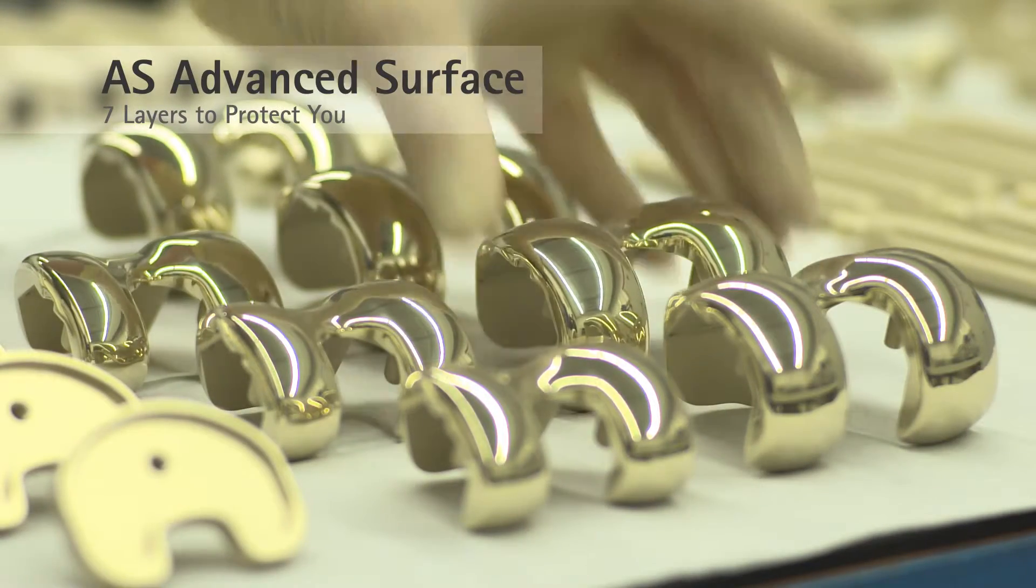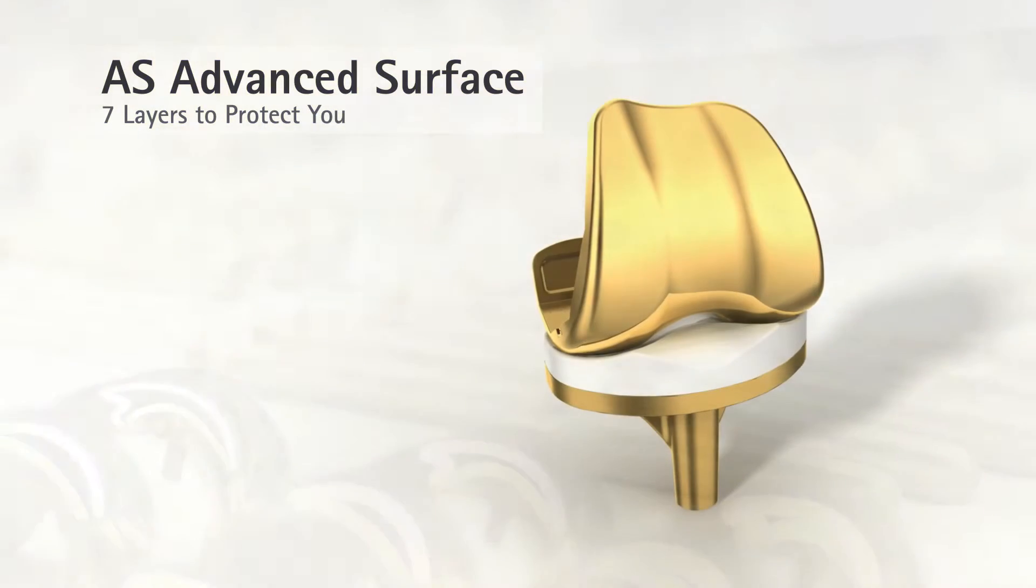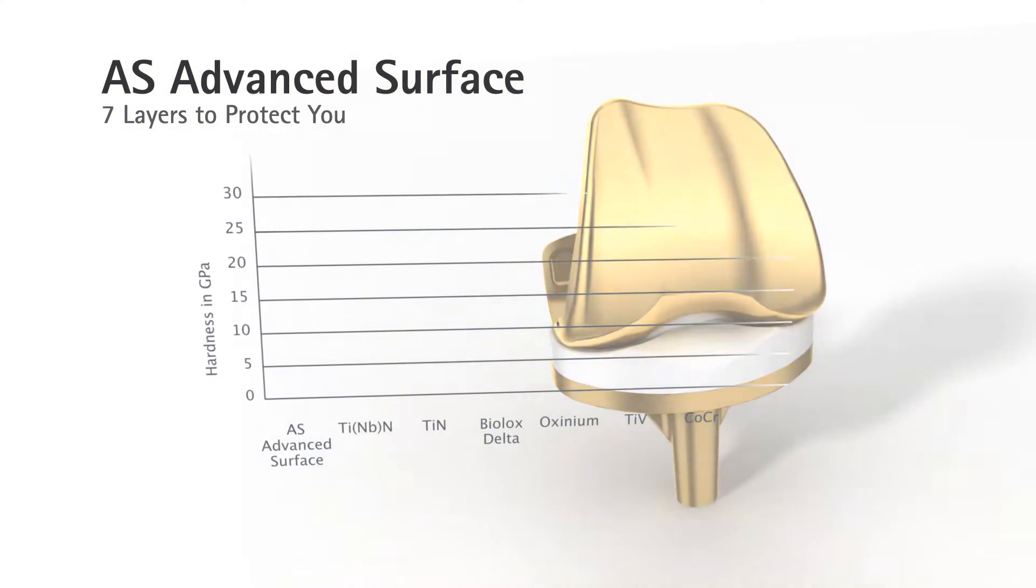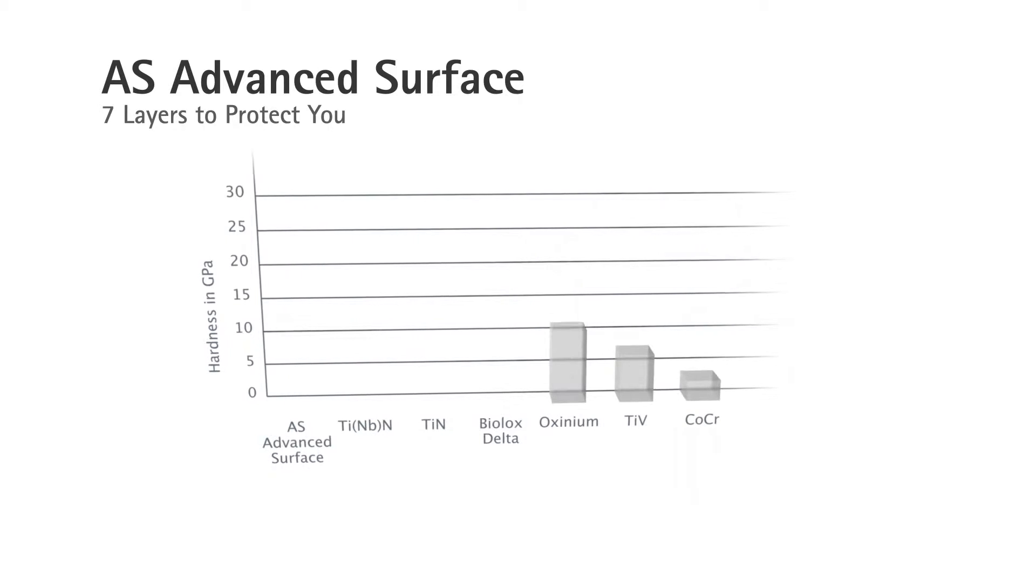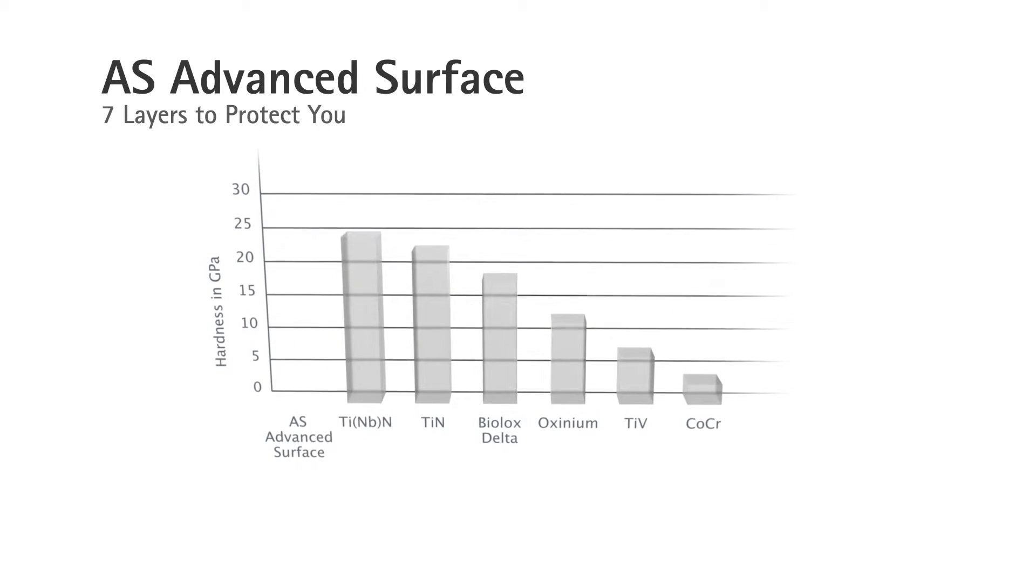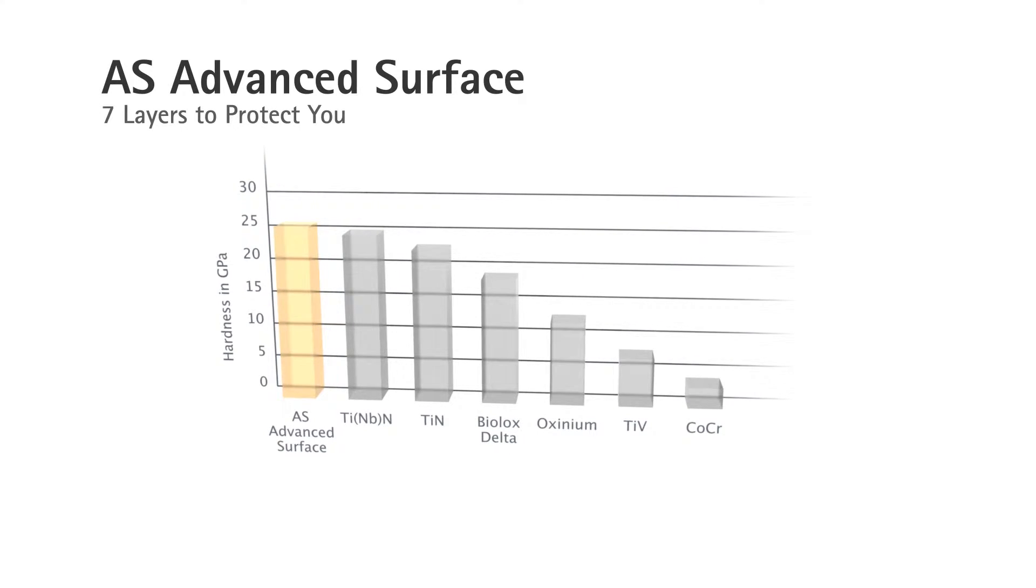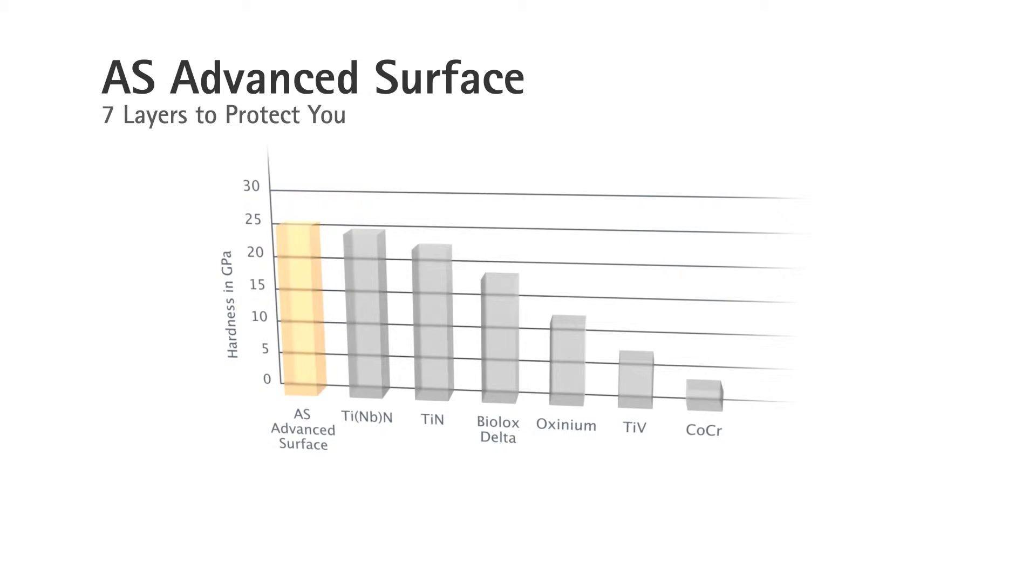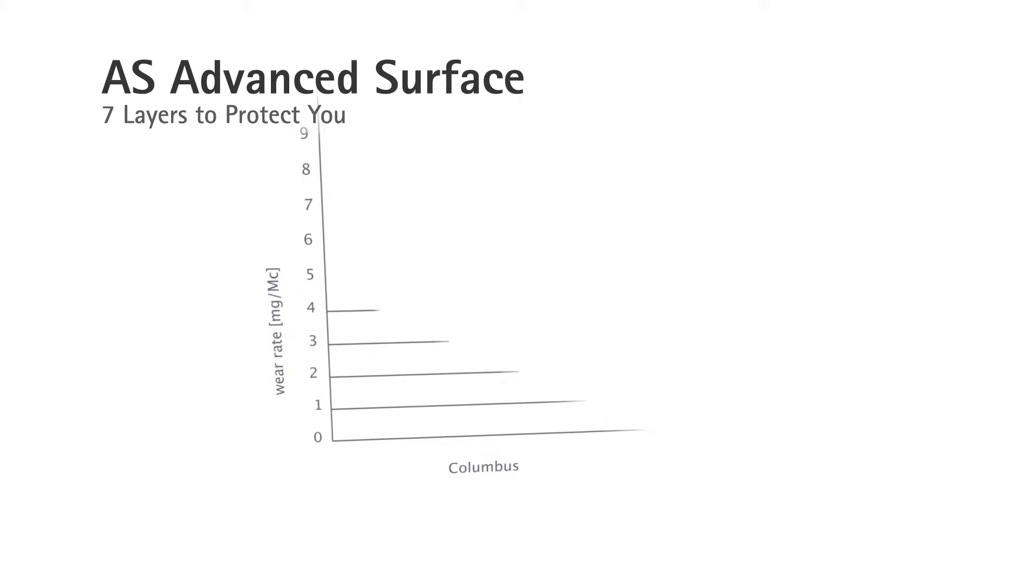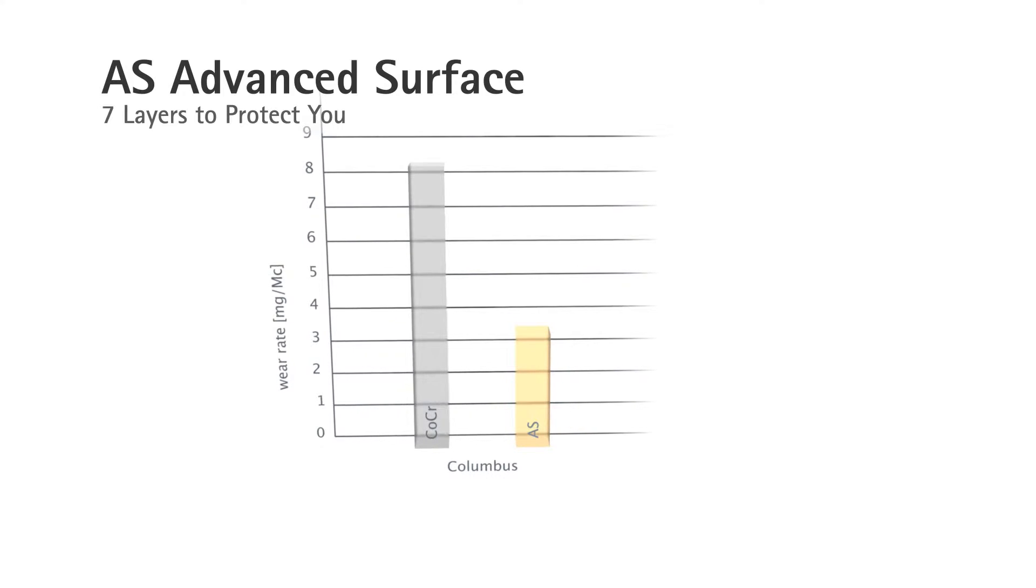A hard surface increases scratch resistance and ensures lower polyethylene abrasion. The new advanced surface technology offers one of the hardest surfaces in the market. Implants with an advanced surface coating reduce abrasion by up to 65% compared to traditional implants. In other words, they can more than double the length of time a patient can expect to continue walking around freely.